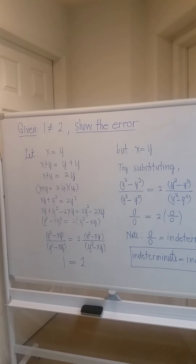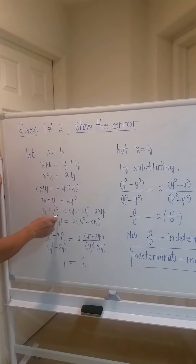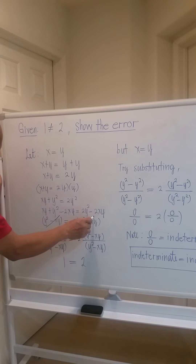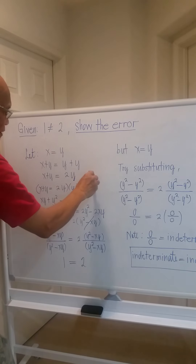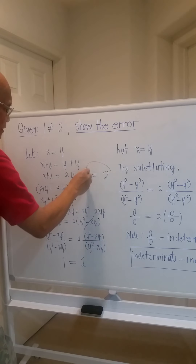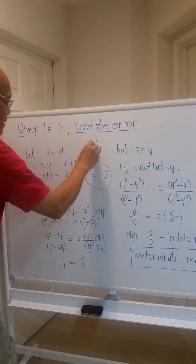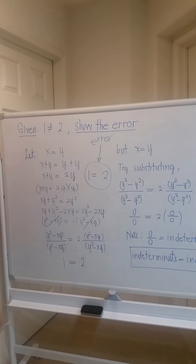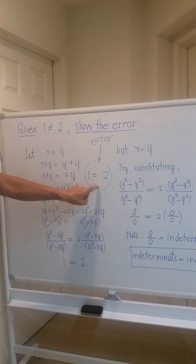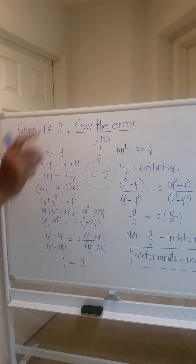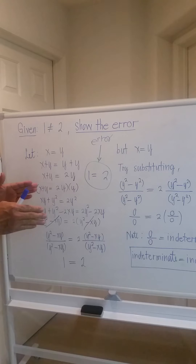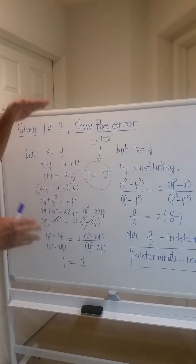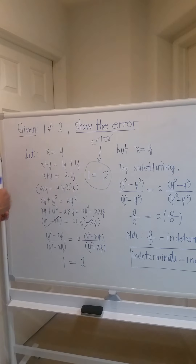From the previous blogger, he tried to cancel out y squared minus xy on both sides. If you cancel out y squared minus xy and y squared minus xy, what will come out will be 1 is equal to 2. But there is an error on this one. You cannot just cancel out like that, because in algebra, to cancel out you should cancel terms on the numerator and denominator — not on the left side and the right side. There is no basis for that.